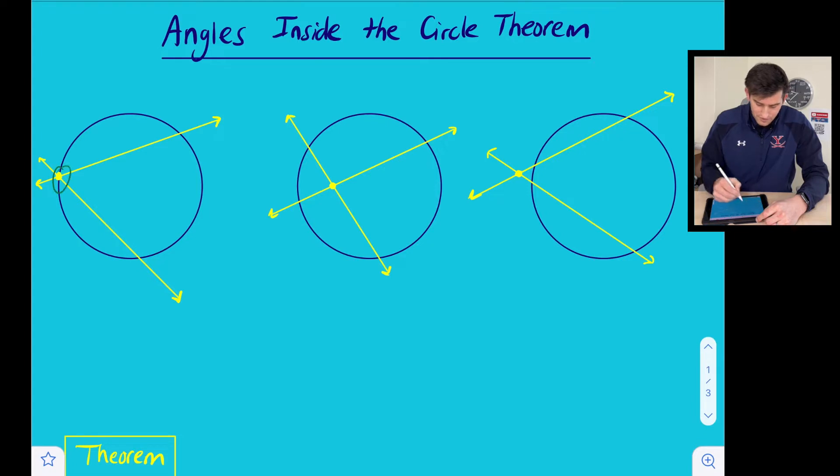And we have these three circles here. Notice our three intersection points that our two lines have. On the first one here, these two lines could intersect on the circle, they could intersect inside the circle, and they could intersect outside the circle.